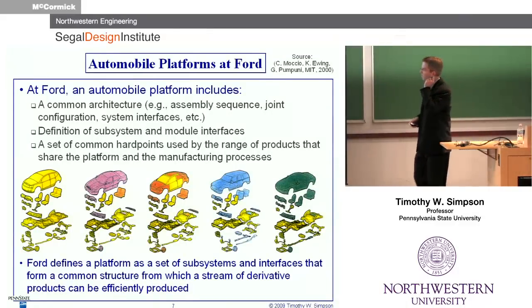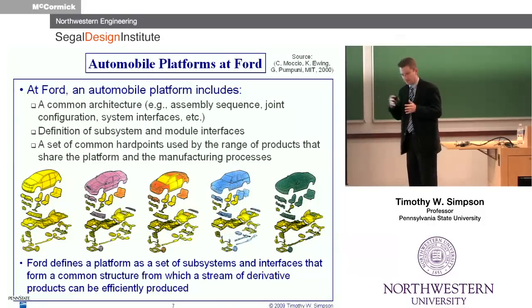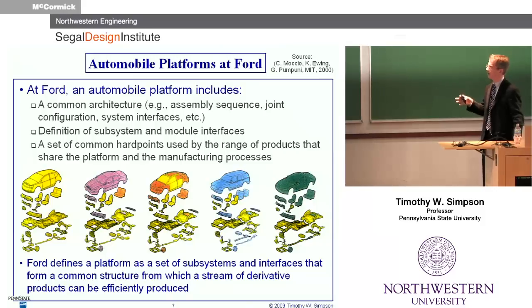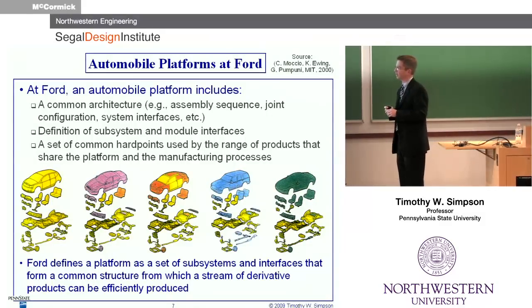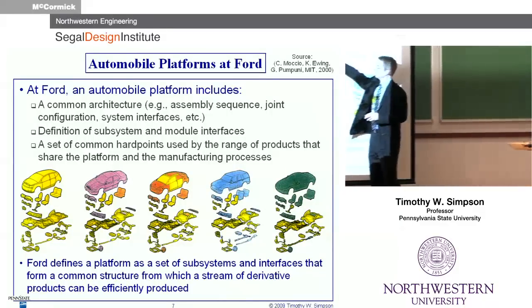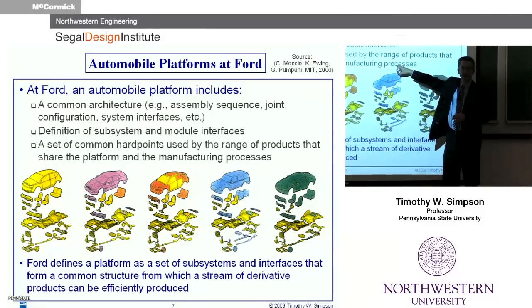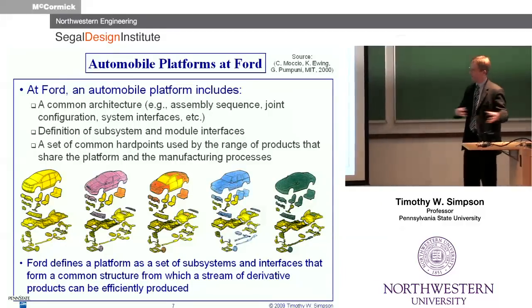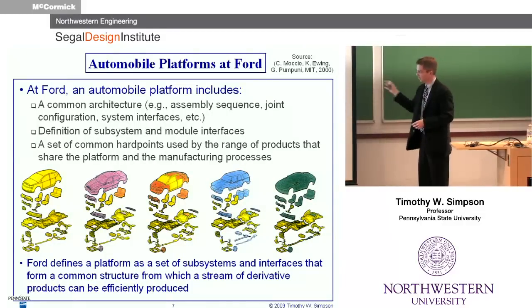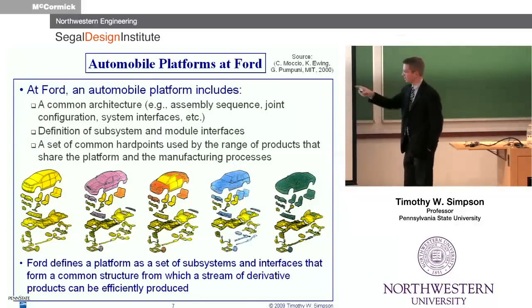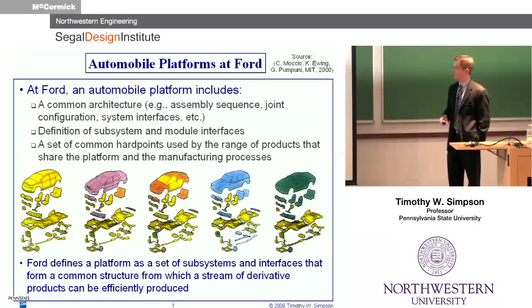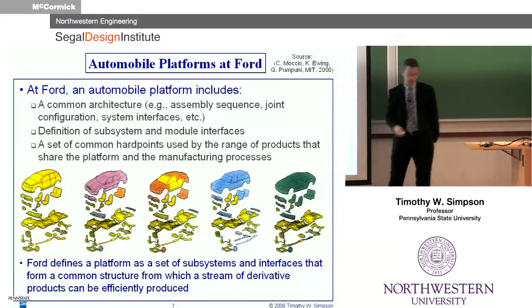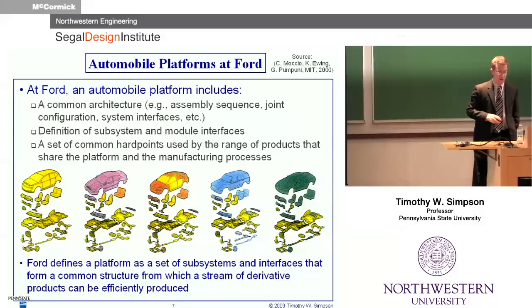Slightly different as a counterexample: Ford has a slightly broader definition. Everybody in the automotive industry I've talked to has a slightly different mindset or definition of what the platform is. Here from Ford, not only is it the common architecture, but they also look at the interfaces and, more importantly, the hard points — where the car comes together on the assembly line. For them, the biggest capital investment is in putting together a new plant. The more they can leverage the process and manufacturing side and have these same cars coming down the line with the same hard points, the more sharing and reuse they get. All the components in yellow are reused across one or more of their cars.